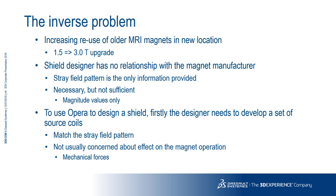Now we go on to the second part of the presentation, looking at the common problem of upgrading an old 1.5 Tesla magnet to a new 3 Tesla magnet. The installer of the 3 Tesla magnet has the support of the magnet manufacturer and goes through the process we've just outlined. But rather than being thrown away, the 1.5 Tesla magnet tends to get sold on to a second hospital with no magnet manufacturer involvement. So the only information the installer has to work with is the stray field plot, which gives the magnitude of the field but not the directions. To calculate shielding requirements for this scenario, we need to first develop a model of the magnet. If they're concerned about mechanical forces generated by the magnet, this is available in the Opera post-processor.